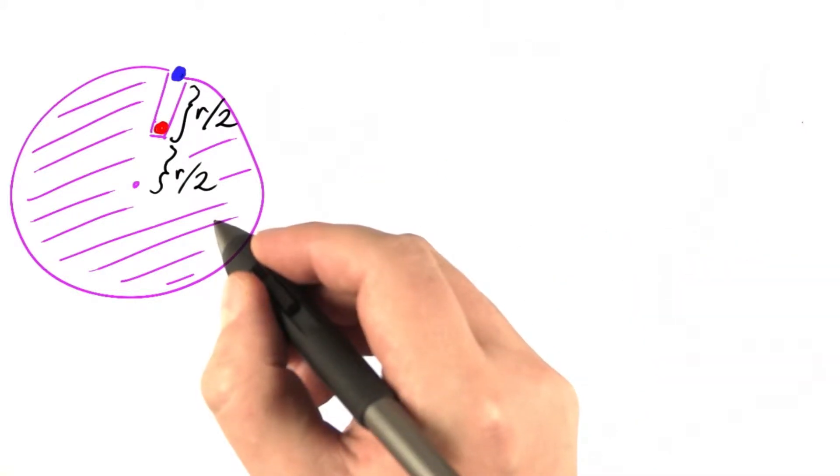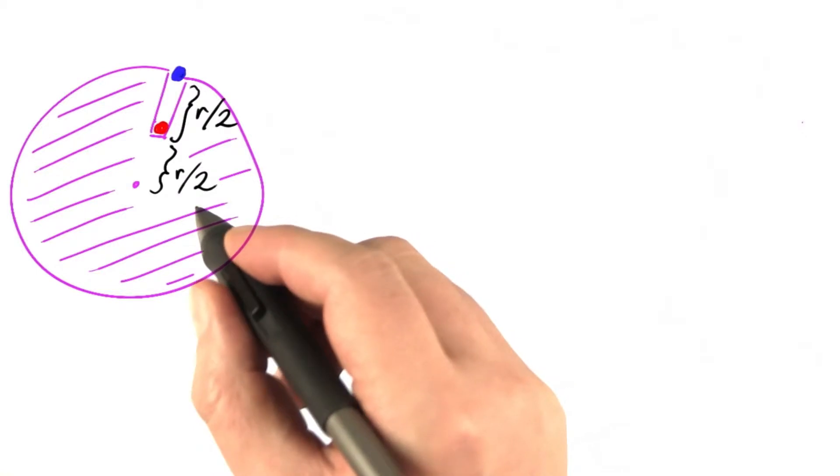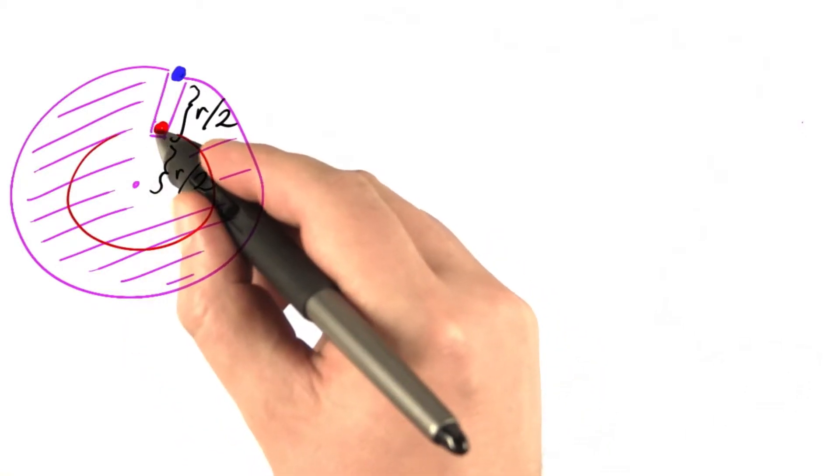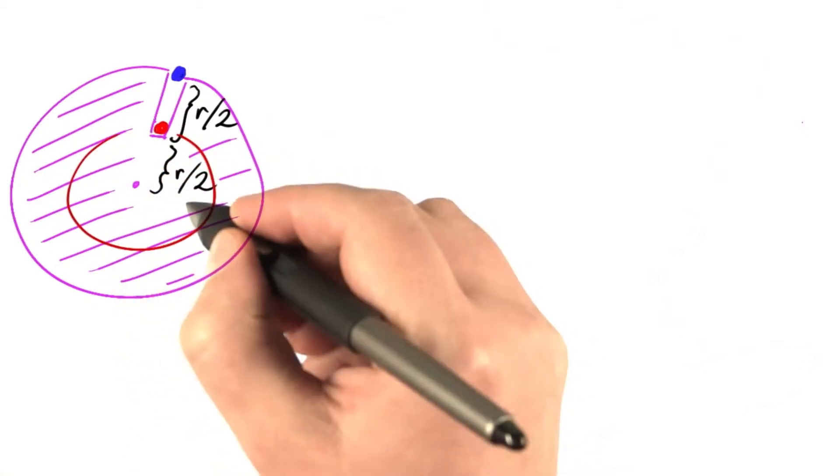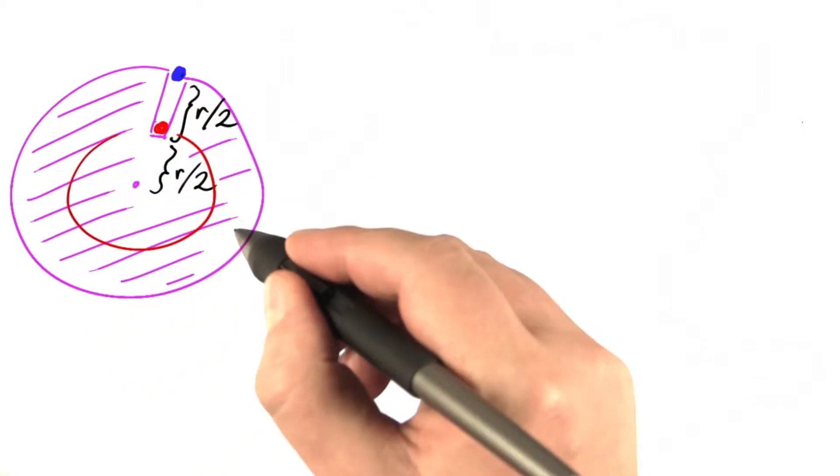The trick is to add an imaginary sphere of half the radius. And then we can look at the force from the core part and the force from the shell. And this is where the name shell theorem comes from.